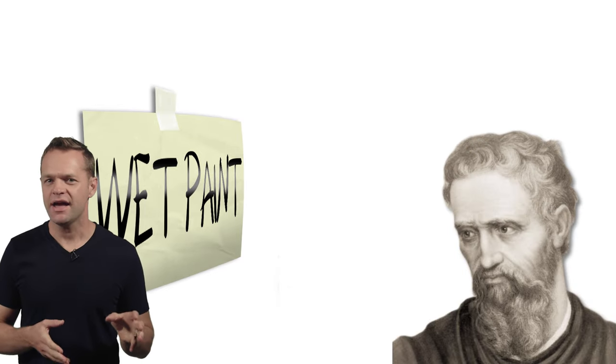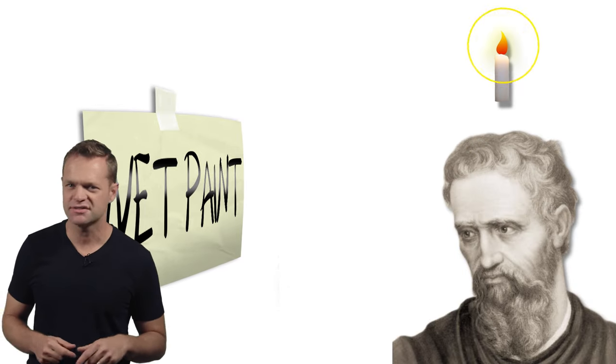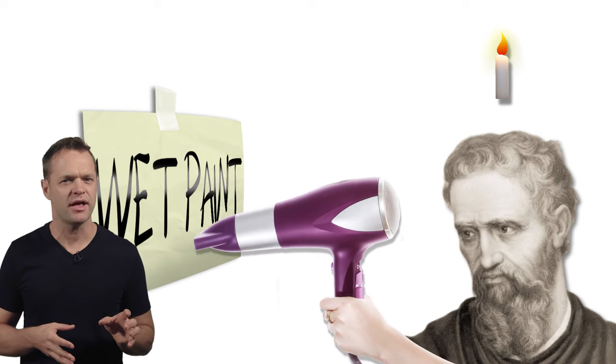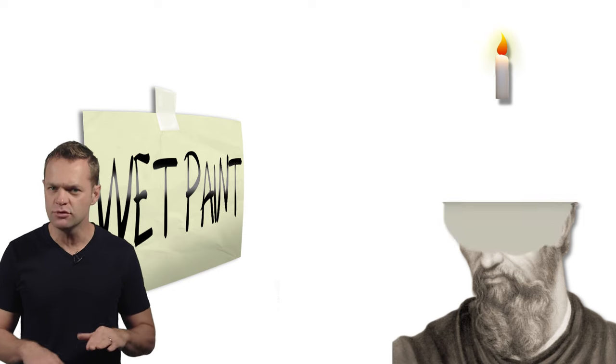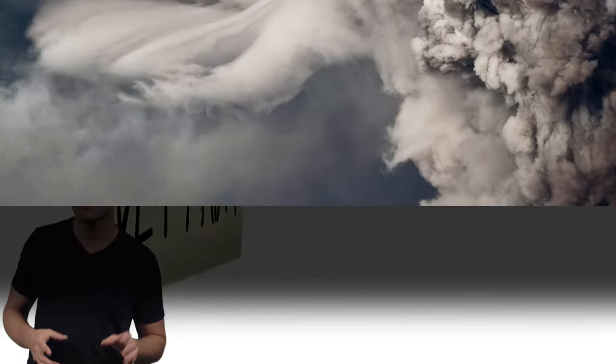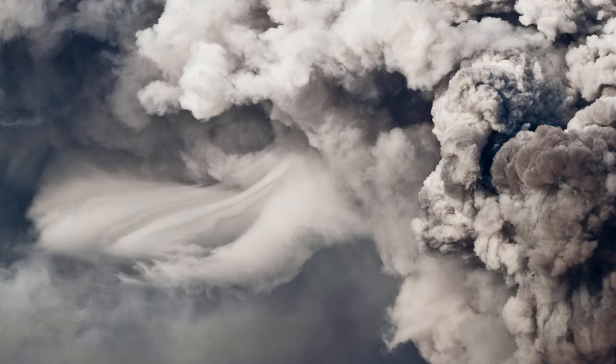Michelangelo, on the other hand, had an ingenious idea. Check this out. In order to speed up the drying time of the plaster, and to attain the smoothest surface to paint on, Michelangelo added ground volcanic ash instead of sand.